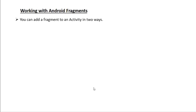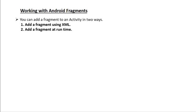Now we can learn how to add a fragment to an activity. You can add a fragment in two ways. First, you can add a fragment directly to the XML layout file. Second, you can add a fragment at runtime — if you want to add, remove, or replace a fragment at activity runtime, you have to add the fragment programmatically.